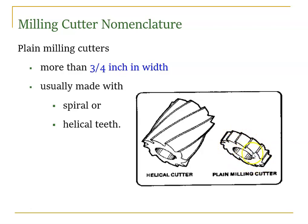The milling cutter has T-slots or keyways used to connect to the spindle. The keyway controls power transmission from the spindle to the motor or from the spindle to the tool. This is the plain or spiral type. The helical type has an inclined helix angle.